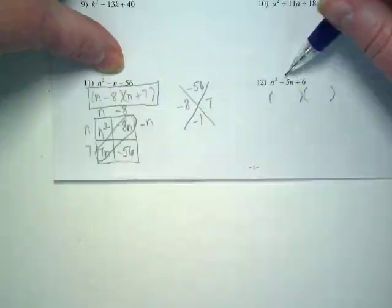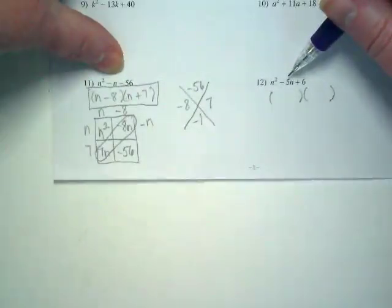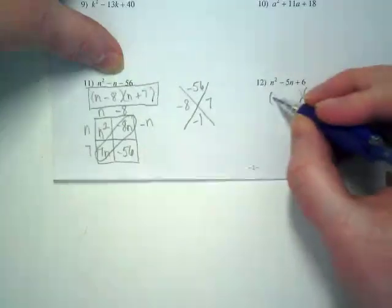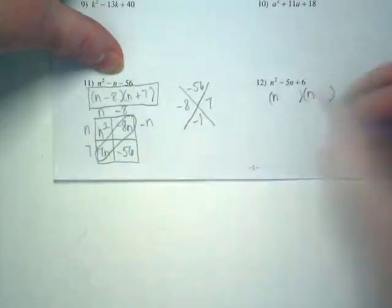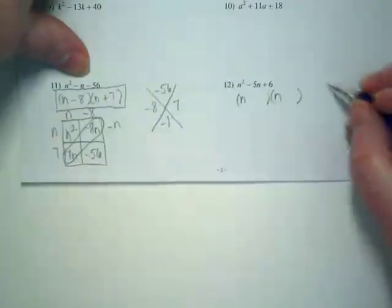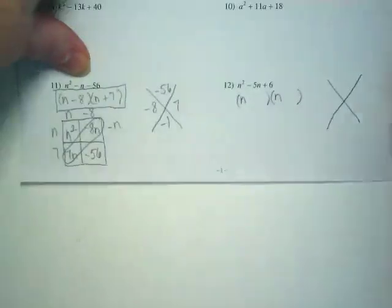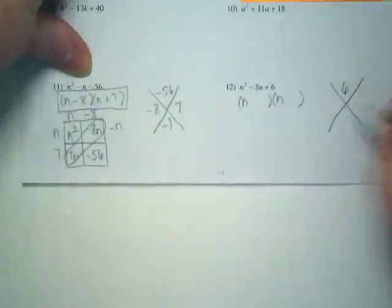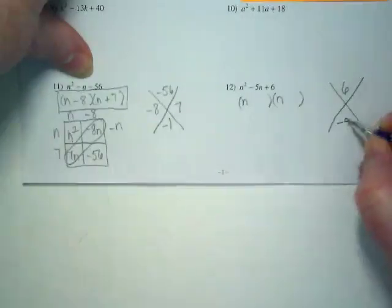And if this is a negative, what do you think the symbols are going to be? We're going to have negatives. But let's get our variable in here. Let's get our x puzzle set up. I have positive 6 up here, negative 5 down here.